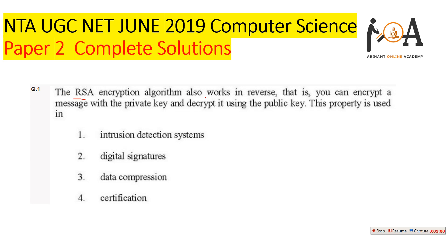The first question is: the RSA encryption algorithm can also work in reverse — that is, you can encrypt a message with the private key and decrypt it using the public key. This property is used in what context? This is a network security question, and we have discussed it in our computer network security session. The correct answer is digital signature.